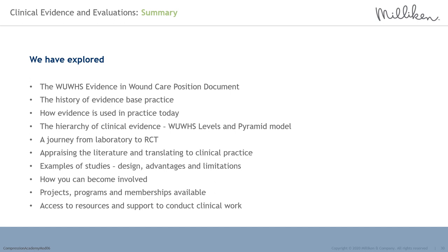To summarise, in this module we have explored the World Union of Wound Healing Society's Evidence in Wound Care Position document, the history of evidence-based practice, how evidence is used in practice today, the hierarchy of evidence including the WUWHS levels and a pyramid model, a journey from laboratory to randomised controlled trial, appraising the literature and translating to clinical practice, examples of studies with their design, advantages and limitations, how you can become involved, and projects, programmes and memberships that are available, along with access to resources and support to conduct clinical work.